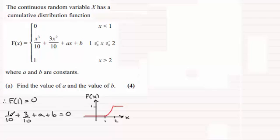Now if I multiply through by 10, we know that 1/10 plus 3/10 is 4/10, so if I multiply through by 10 we're going to therefore have 4 + 10a + 10b is going to equal 0. So this is my first equation that I'm going to be using when it comes to doing simultaneous equations.